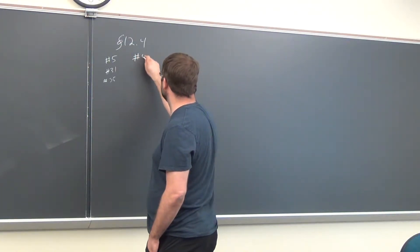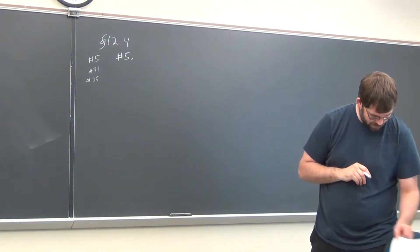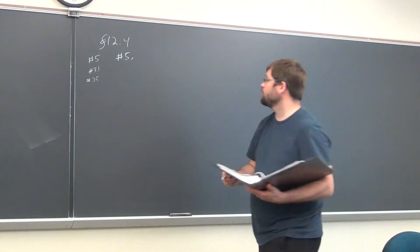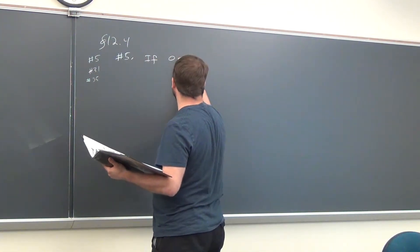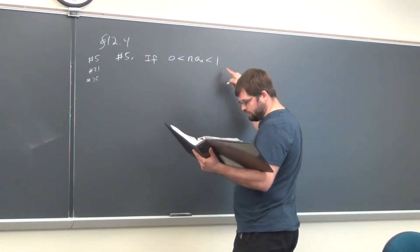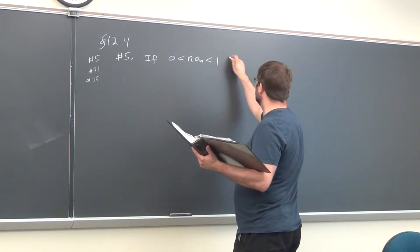Homework problems for 12-4 here, number 5. I'll just write it up here. If 0 is less than or equal to n times a_n is less than 1, or 0 less than n·a_n less than 1 for all n.